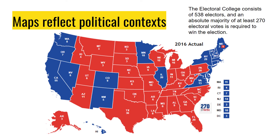For example, maps reflect political contexts. This is a representation of the 2016 political map the night of the election. The Electoral College consists of 538 electors, and an absolute majority of at least 270 electoral votes is required to win. This shows you how many electoral college votes went to different candidates — blue representing the electoral votes awarded to the Democratic candidate, and red showing the electoral votes awarded to the Republican candidate based on the popular elections in each state.